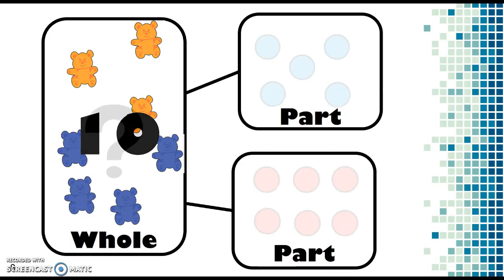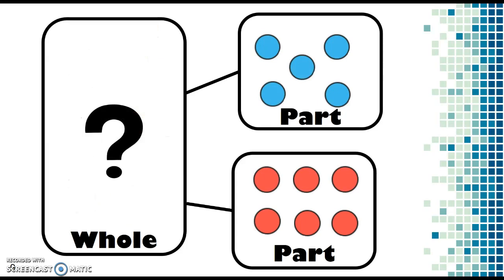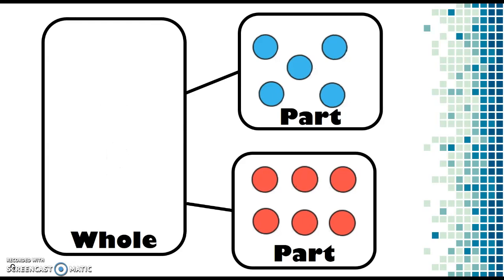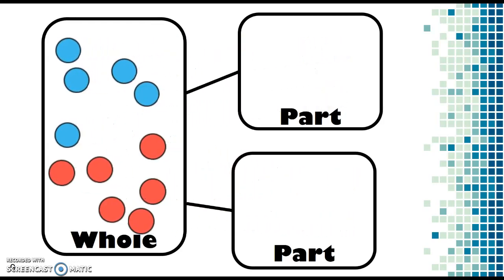Let's take a look at another one. Here I'm using counters. I have a part of 5, a part of 6, and I am missing the whole. All of my parts will combine to form the whole, which is 11.